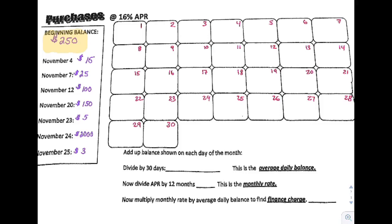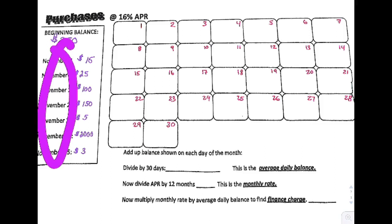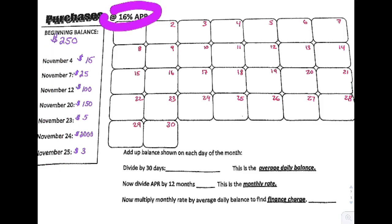This is an example to help you with today's assignment, not the assignment itself. This is the bottom of yesterday's notes. If you look at the bottom of the sheet you got yesterday, you can see that the dates say November and the APR is 16%, so make sure you're on the same problem. If you haven't already filled out the calendar dates 1 through 30 in the corner, go ahead and do that. You can pause the video any time and go back.